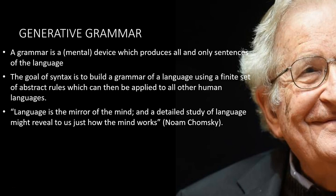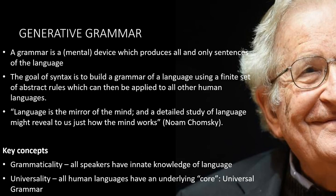Language is the mirror of the mind, and a detailed study of language might reveal to us how the mind works, said Chomsky. Key concepts in generative grammar are the notion of grammaticality — some sentences are grammatical and some are ungrammatical — and all speakers have innate knowledge of a language, so any speaker can give you a grammaticality judgment about whether a sentence is good in their language or not. Another key concept is universality: the idea that all human languages have an underlying core grammar, which we call universal grammar. Over the course of the next few lectures, we will be making it clearer what a simple generative grammar looks like, and we will be developing a simple generative grammar of English.